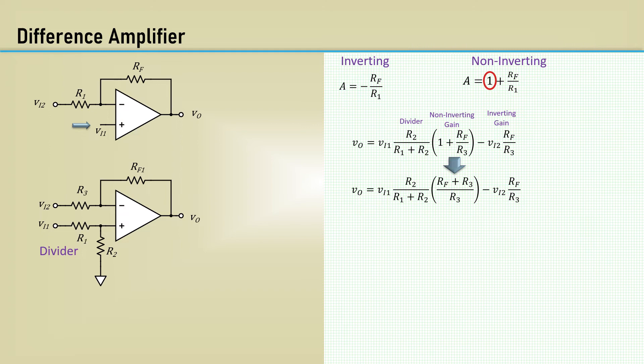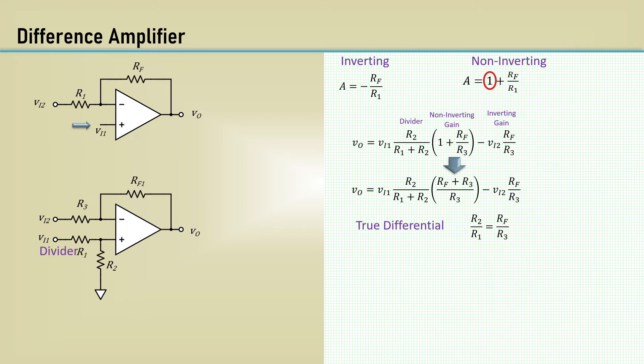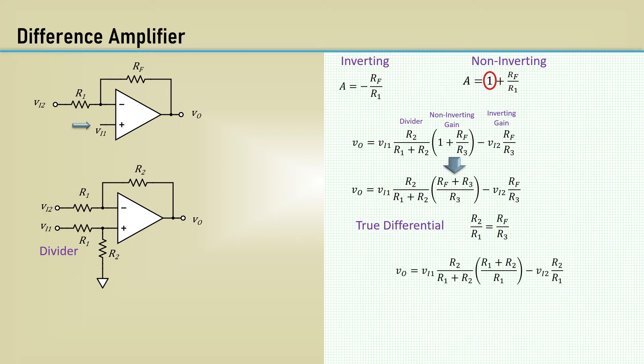The output voltage of the true difference amplifier is 0 if VI1 equals VI2. For that to happen, the ratio of R2 to R1 must equal RF over R3. Let's now rename the reference designators as necessary. Here's the equation for the output voltage with the revised reference designators. The R1 plus R2s cancel, and we are left with the differential input voltage times R2 over R1.